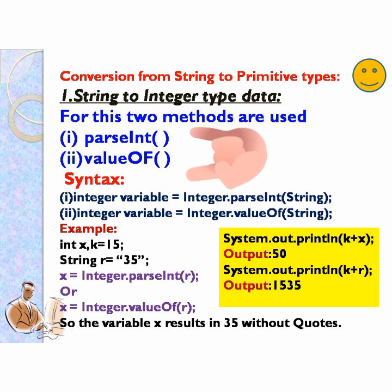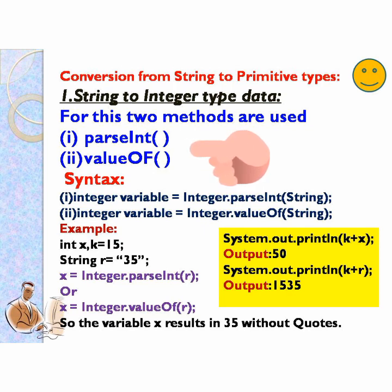For conversion from string to primitive type, two methods are used: parseInt and valueOf. The syntax is: integer variable equals to Integer.parseInt(string), or integer variable equals to Integer.valueOf(string). For example, int x, k equals to 15, and String r equals to "35". You can use x equals to Integer.parseInt(r) or Integer.valueOf(r). Integer is the wrapper class.